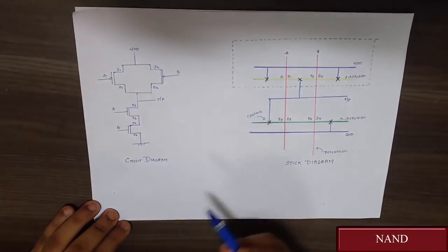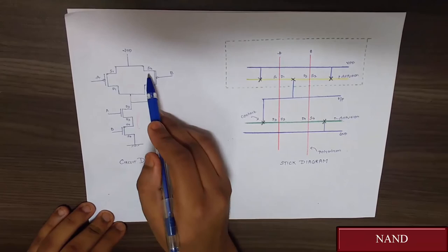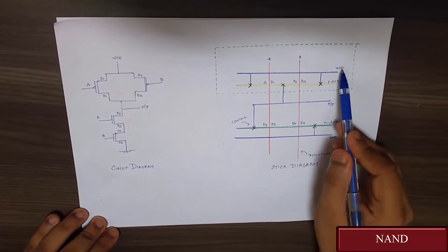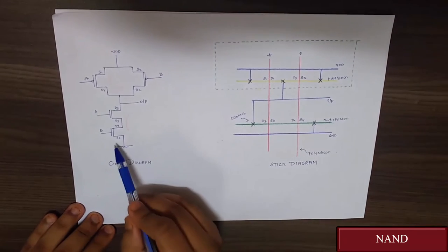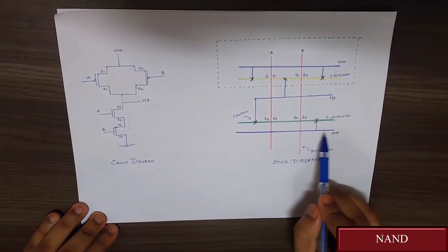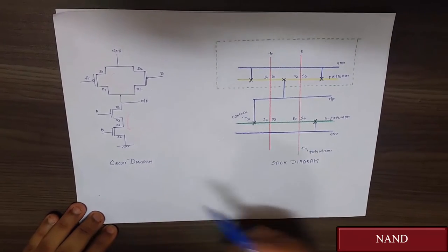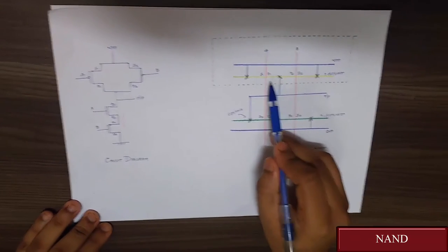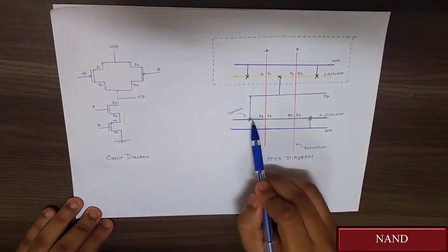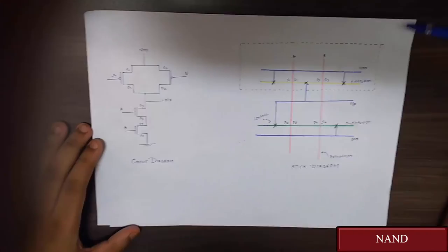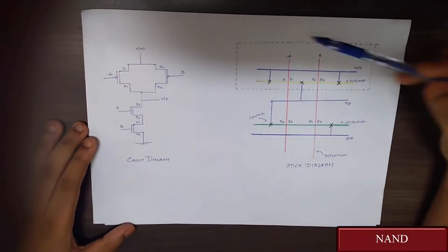From the circuit diagram we can see that S1 and S2 are connected to VDD. Hence through contact, S1 and S2 are connected to VDD. Similar to that, S4 is connected to ground. So S4 is connected to ground through the contact. Now the output is obtained at the junction of D1, D2, and D3. Since D1 and D2 are combined here, D3 is taken from here and the output is provided. And the dotted line here represents the NMOS.